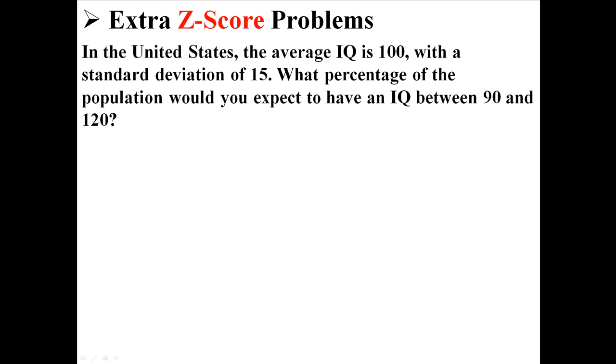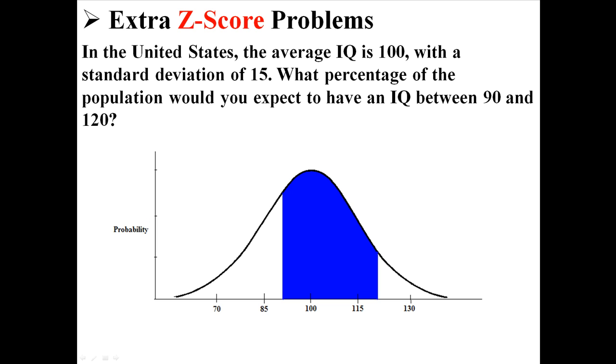Now, let's say I made the question a little bit harder. We're in the United States, the average IQ is 100, and the standard deviation is 15. So now the question is, what percentage of the population would you expect to have an IQ between 90 and 120? So now I'm asking you this question. The blue shaded area is the area between 90 and 120, or at least it should be.